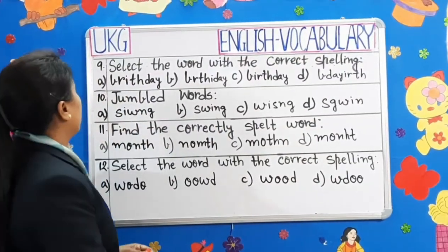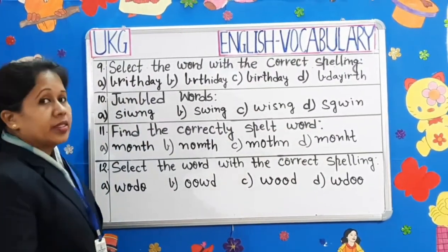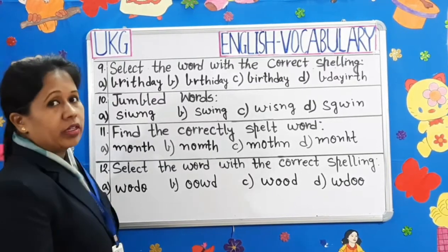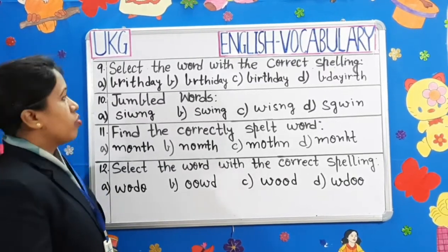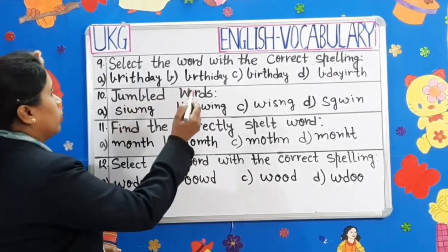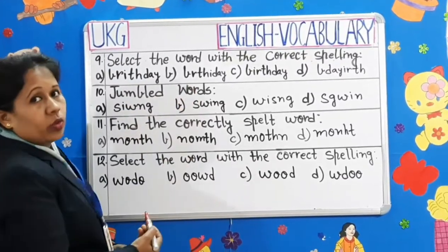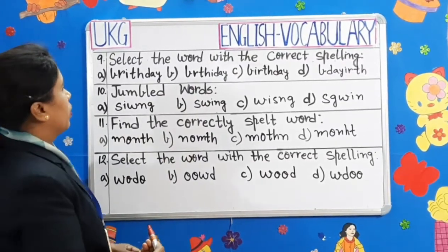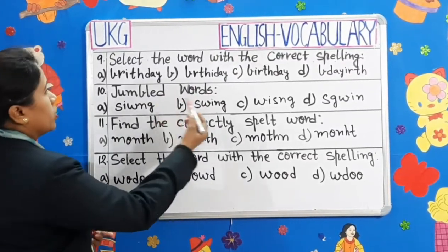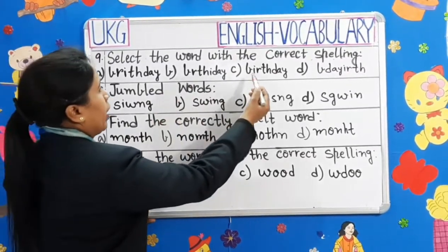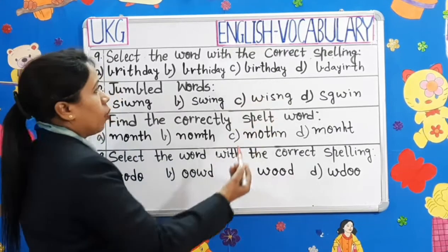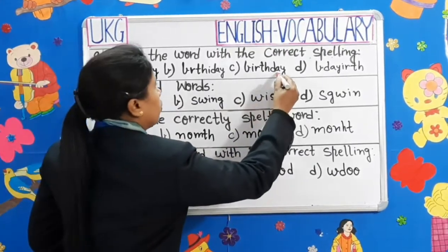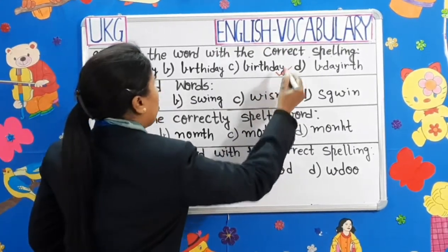Question number 9: Select the word with the correct spelling. Children, here you have to select which one is the correct answer. Which one is correct? B-I-R-T-H-D-A-Y — that is the correct spelling. So, we will put a tick on it.